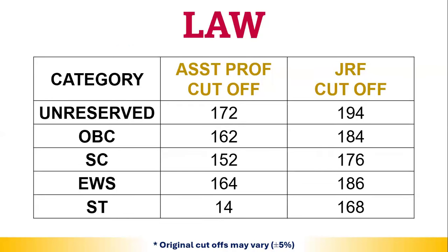Next, we will see the next subject. For the unreserved category, the Assistant Professorship cutoff is 178, and JRF will be 194. Other categories can see their respective cutoffs and verify.